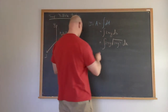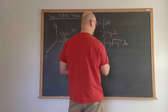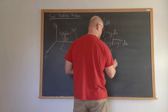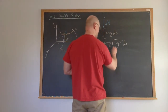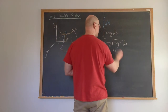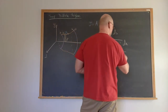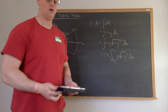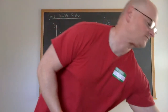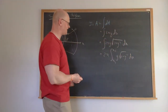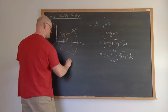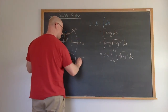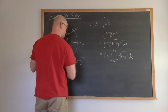We can factor out the 2π, giving us 2π times the integral from x1 to x2 of y√(1 + y'²) dx. From here we can see that f in this scenario is equal to y times the square root of 1 plus y prime squared.